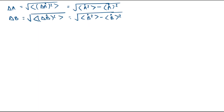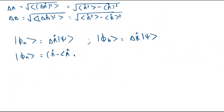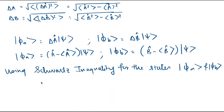Now let's see what happens when delta-A-cap and delta-B-cap are operated on state psi. When delta-A-cap is operated on ket-psi we get a new state phi-a, defined as delta-A-cap times ket-psi. Similarly, when delta-B-cap is operated on ket-psi we get phi-b, equal to delta-B-cap times ket-psi. So phi-a can be written as A-cap minus expectation value of A-cap times psi, and phi-b as B-cap minus expectation value of B-cap times psi.